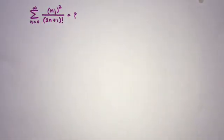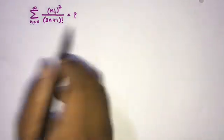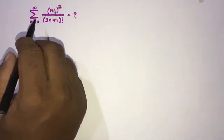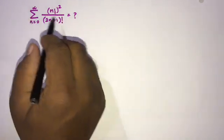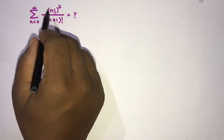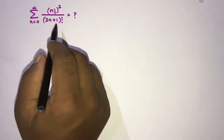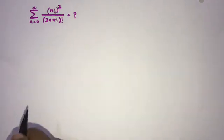Welcome to the Mathematics channel. Today we are going to solve another interesting infinite series question. The question is: sum from n equals 0 to infinity of (n factorial) squared over (2n plus 1) factorial.